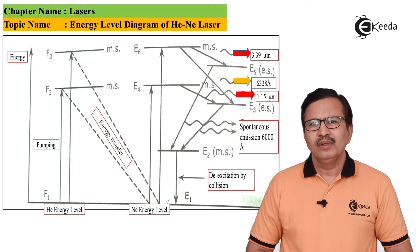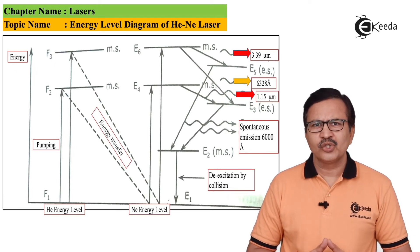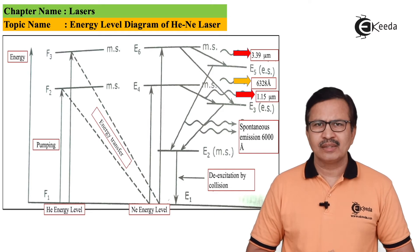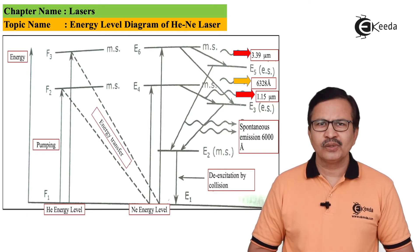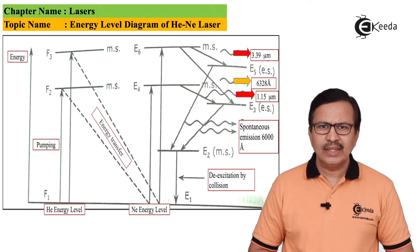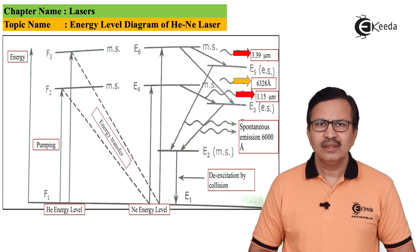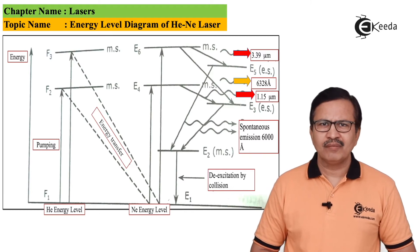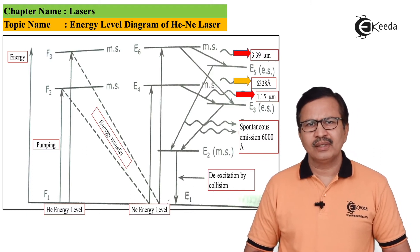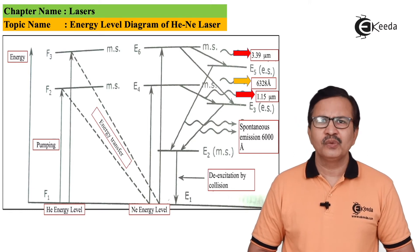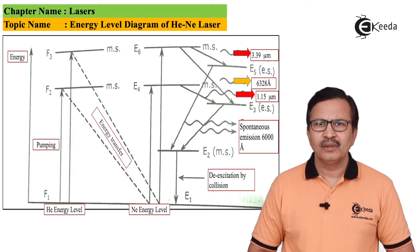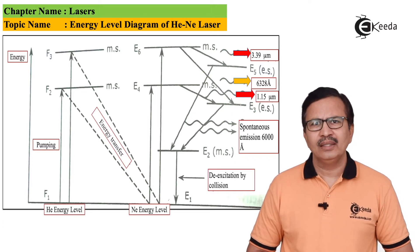There are always some photons liberated earlier by spontaneous emissions. These photons will now stimulate the transition of neon atoms from energy level E6 to energy level E5. This particular transition gives rise to lasing action and the outcoming laser has a frequency of around 3.39 microns.